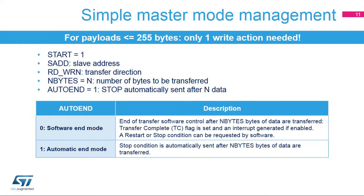Master mode software management is very simple. Only one write action is needed to handle a master transfer with a payload smaller than 255 bytes. The full protocol is managed by the hardware. In order to start a transfer in master mode, I2C control register 2 must be written with the start condition request, the slave address, the transfer direction, the number of bytes to be transferred, and the end of transfer mode. End of transfer mode is configured by the auto end bit. If it is set, the stop condition is automatically sent after the programmed number of bytes is transferred. If the auto end bit is not set, the end of transfer is managed by software. After the programmed number of bytes is transferred, the transfer complete (TC) flag is set and an interrupt is generated if enabled. Then a repeated start or a stop condition can be requested by software.